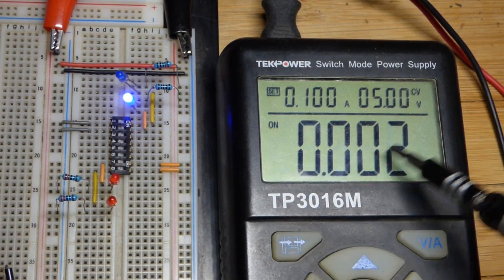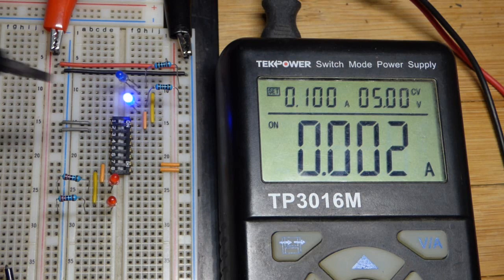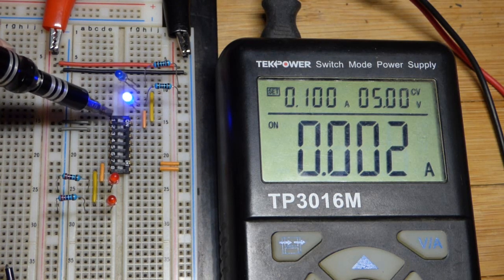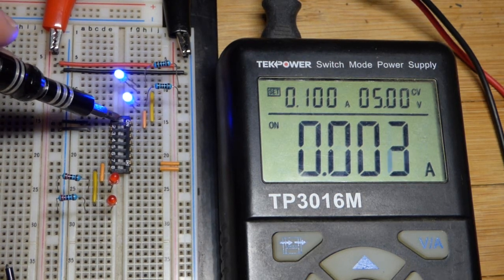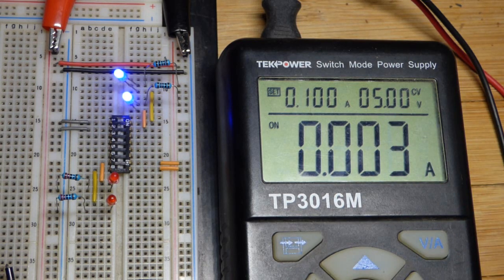There you can see we don't have hardly any current flowing right now. If I turn this one on, it should about double. This isn't as accurate as a multimeter there, but we probably got close to like three milliamps of current.